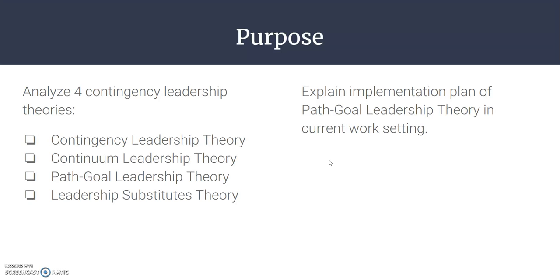The four theories are: the contingency leadership theory, the continuum leadership theory, the path-goal leadership theory, and the leadership substitutes theory. There are many contingency leadership theories out there, but those are the four we'll focus on. I will also explain how I would implement the path-goal theory in my current organization.